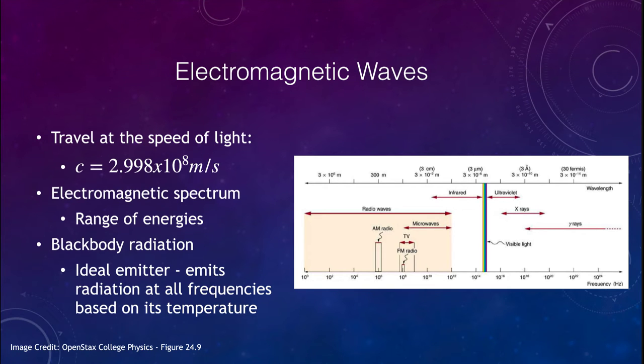First, we want to review electromagnetic waves. Electromagnetic waves are waves that travel at the speed of light, which is 2.998 times 10 to the eighth meters per second. We looked previously at the entire electromagnetic spectrum, which includes things like radio waves, microwaves, infrared, ultraviolet, x-rays and gamma rays, in addition to the more familiar visible light.